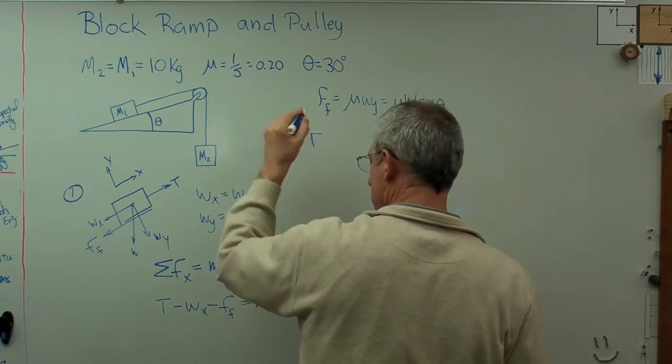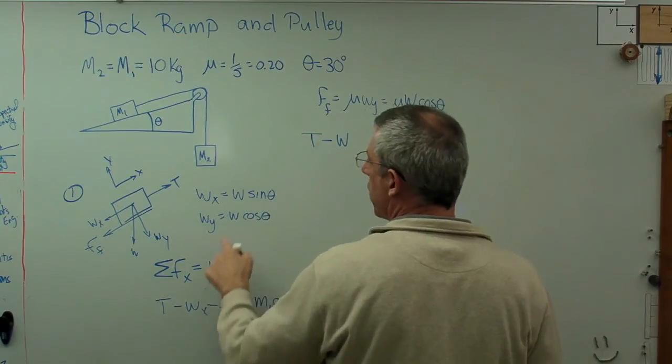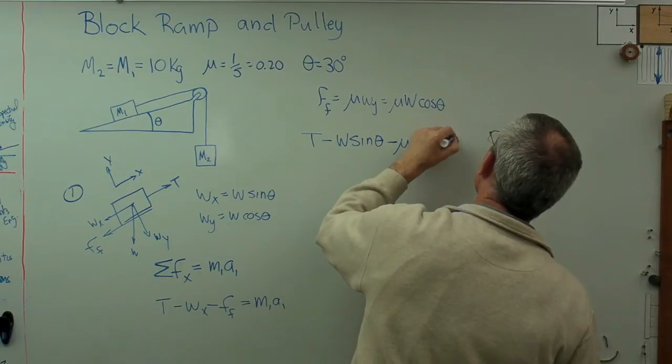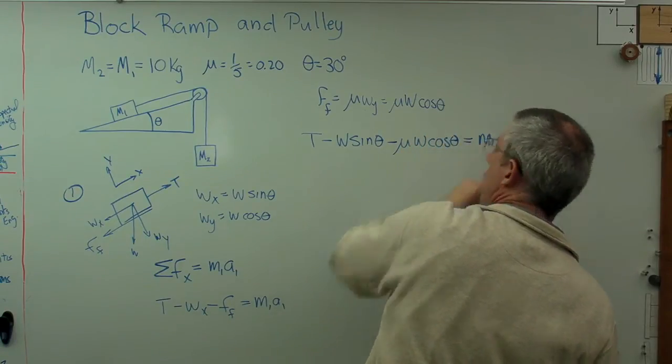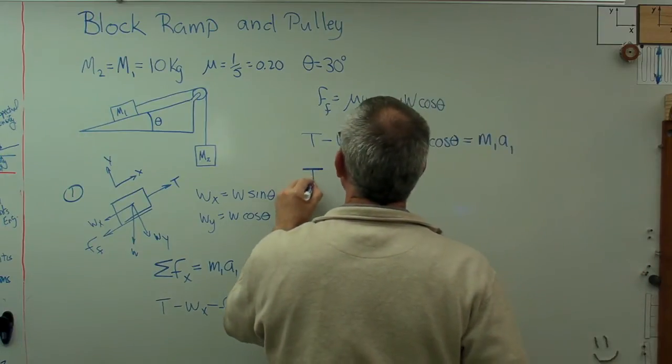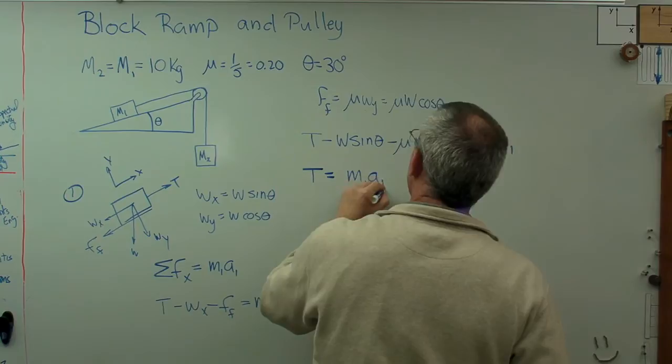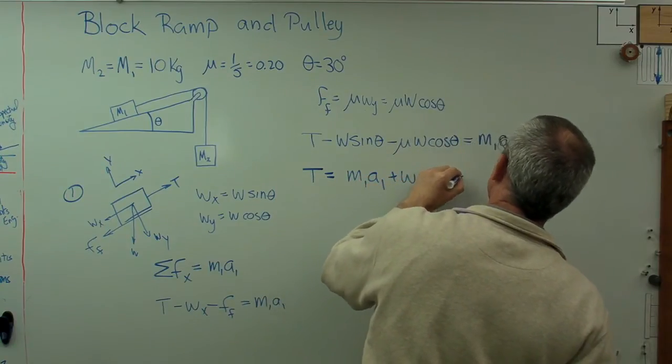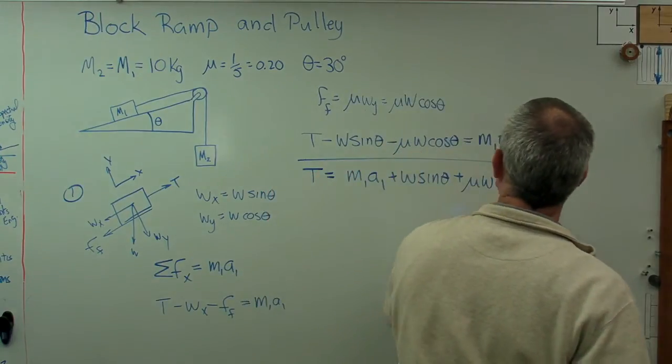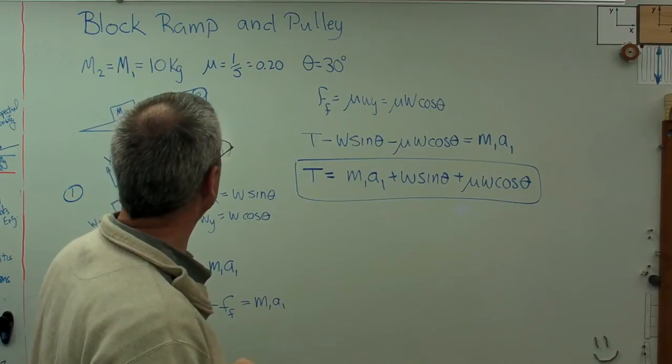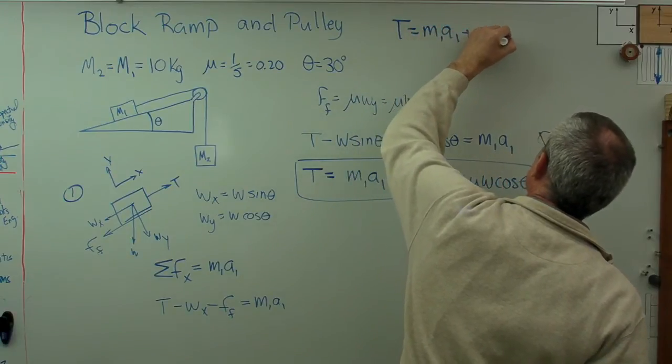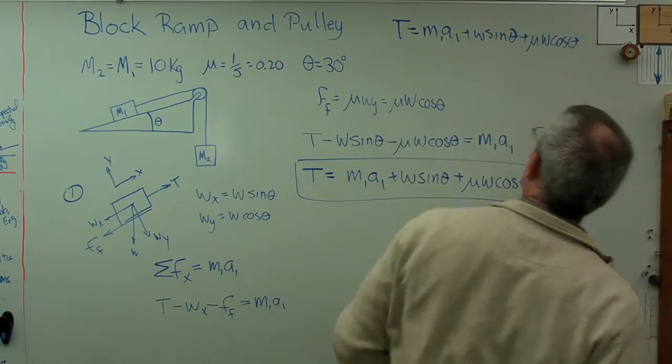Let's plug that in and I'm going to get T minus w sine theta minus mu w cosine theta equals m1 a1. I've got that equation of motion written out. Now it would be nice if I had T equals something like I said, so let's rearrange that. T equals m1 a1 plus w sine theta plus mu w cosine theta. There's my first equation, the equation of motion for block one.